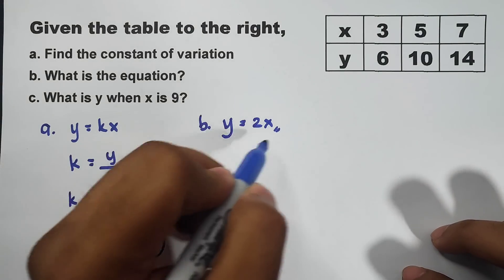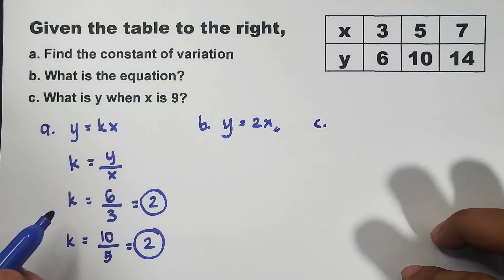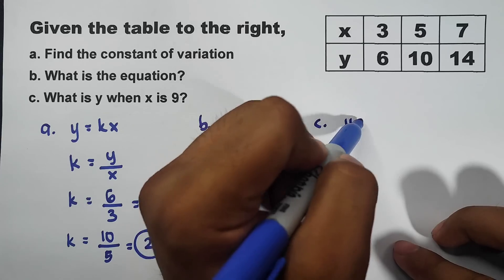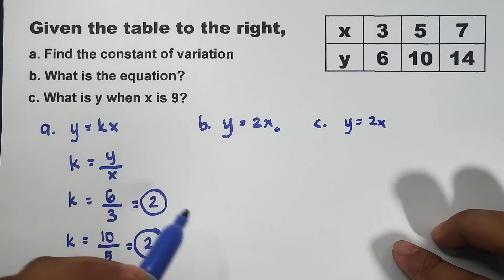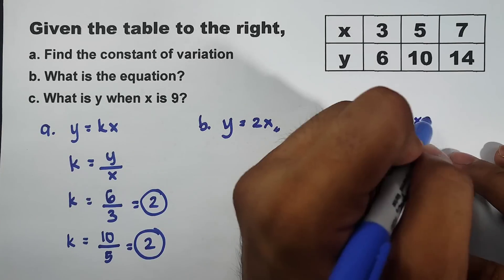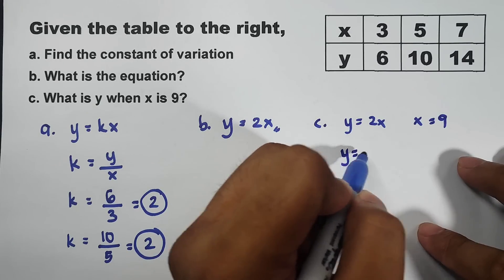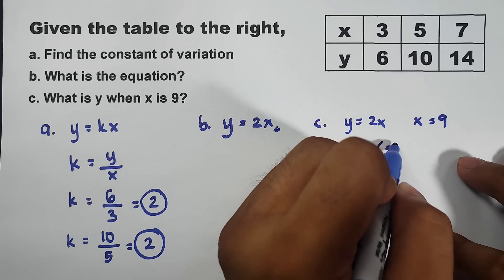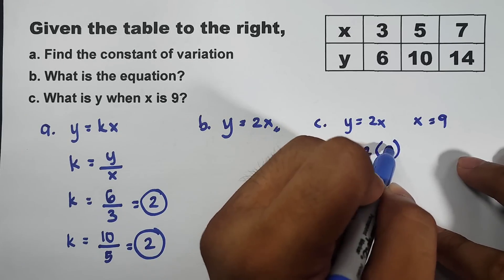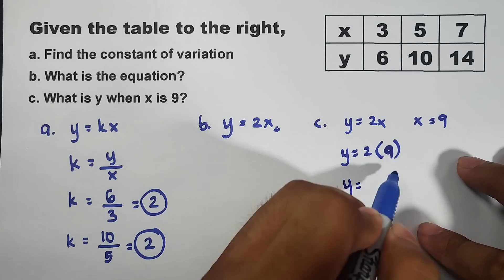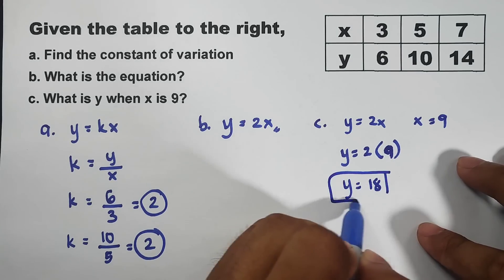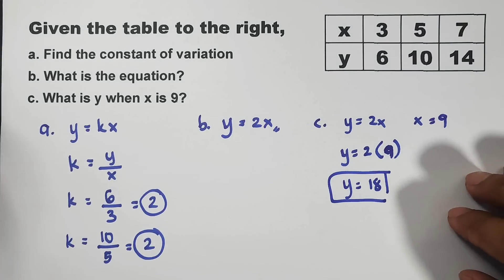For letter C, using this formula, y equals 2x, your x equals 9. Replace it. That is, y equals 2 times 9. Multiply, y equals 2 times 9, which is 18. So, this is our answer. As simple as that.